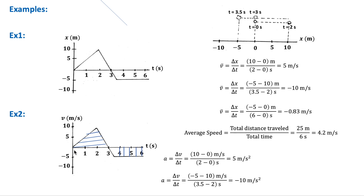From t = 0 to 3 seconds, the displacement equals the area of the triangle: ½ × 3 × 10 = 15 meters. In the second video on kinematics, I will introduce free fall motion and projectile motion. Thank you for watching — please don't forget to like and subscribe, and see you in the next video.